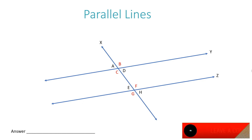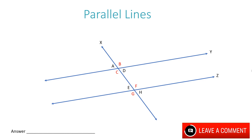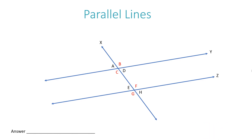If somebody were to refer to parallel lines themselves, they're talking about two lines that do not touch. So in this particular example, line Y and line Z would never touch. They're perfectly parallel. That means at any given time along an axis, or if these were on a coordinate plane, these two lines would never intersect each other at all. They remain parallel.